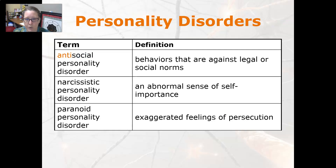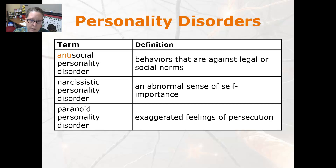Personality disorders: antisocial personality disorder involves behaviors that are against legal or social norms. Narcissistic personality disorder is an abnormal sense of self-importance. Paranoid personality disorder is an exaggerated feeling of persecution.